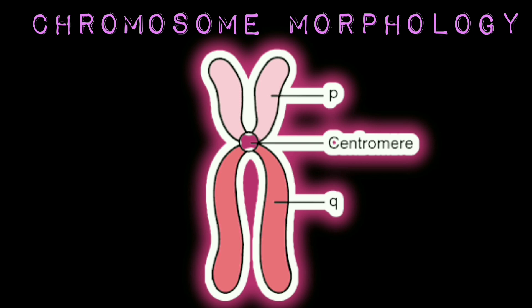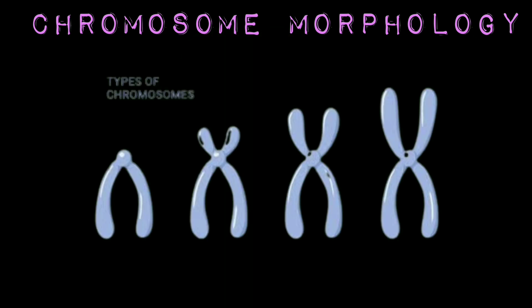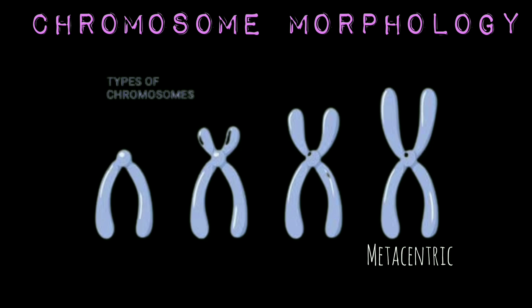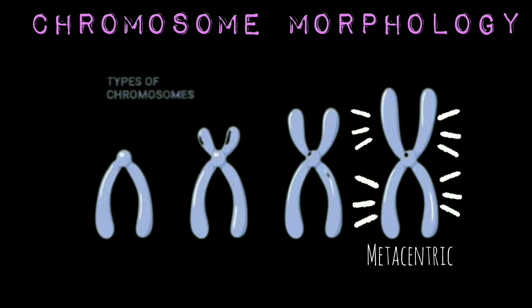Chromosomes may be divided into four classes on the basis of the position of their centromeres: metacentric, submetacentric, acrocentric, and telocentric. In metacentric chromosomes, the centromere is located in the center of the chromosome — that is, the centromere is median — so that the two arms are equal and the arm ratio is 1. Metacentric chromosomes appear V-shaped during anaphase.